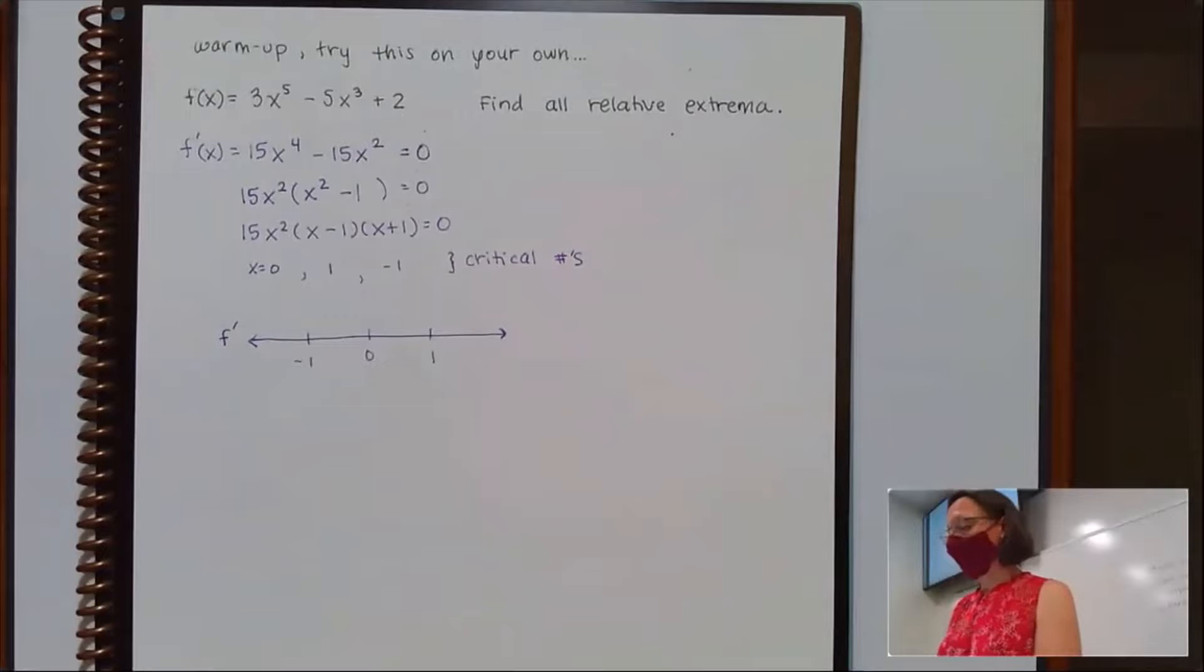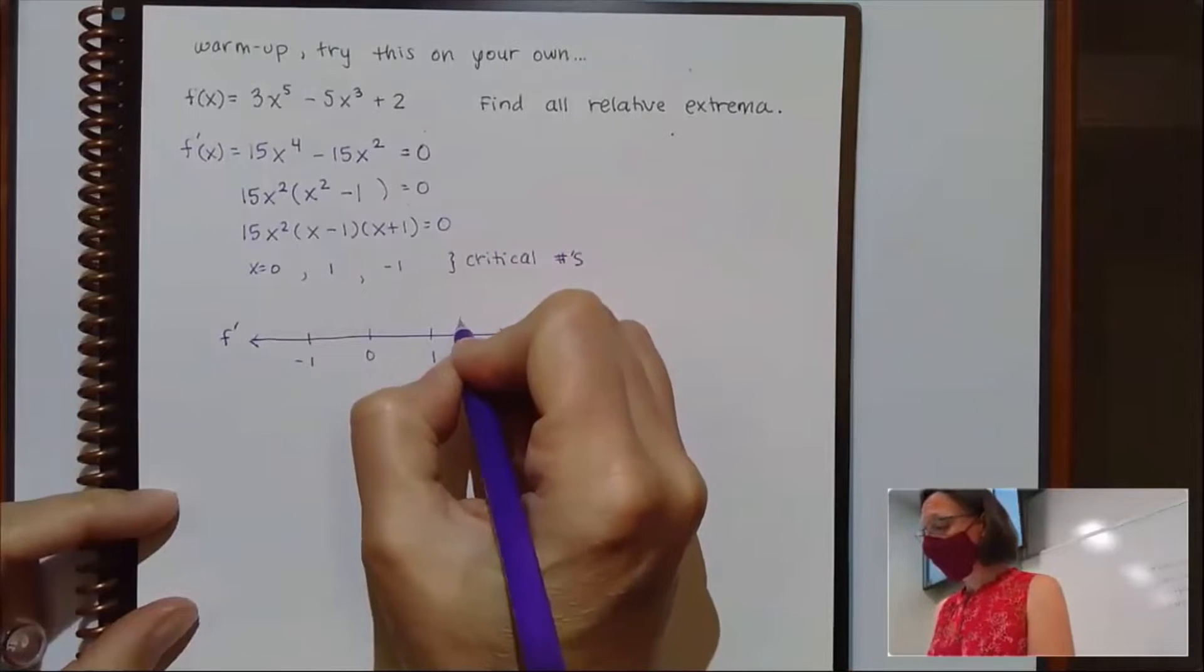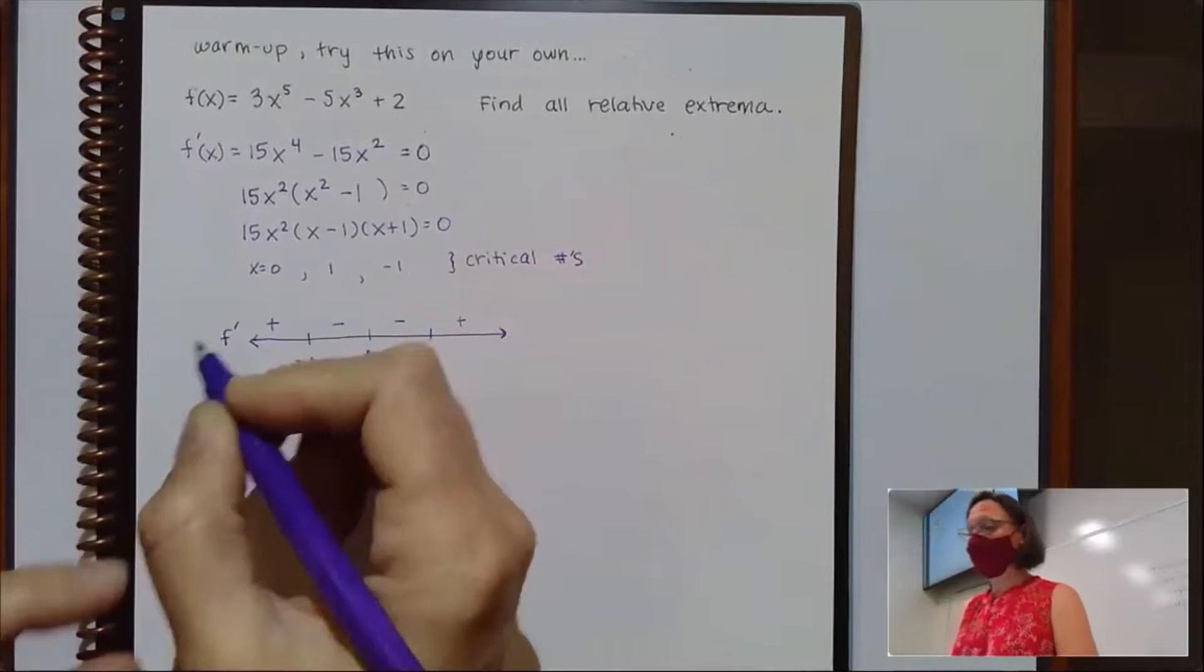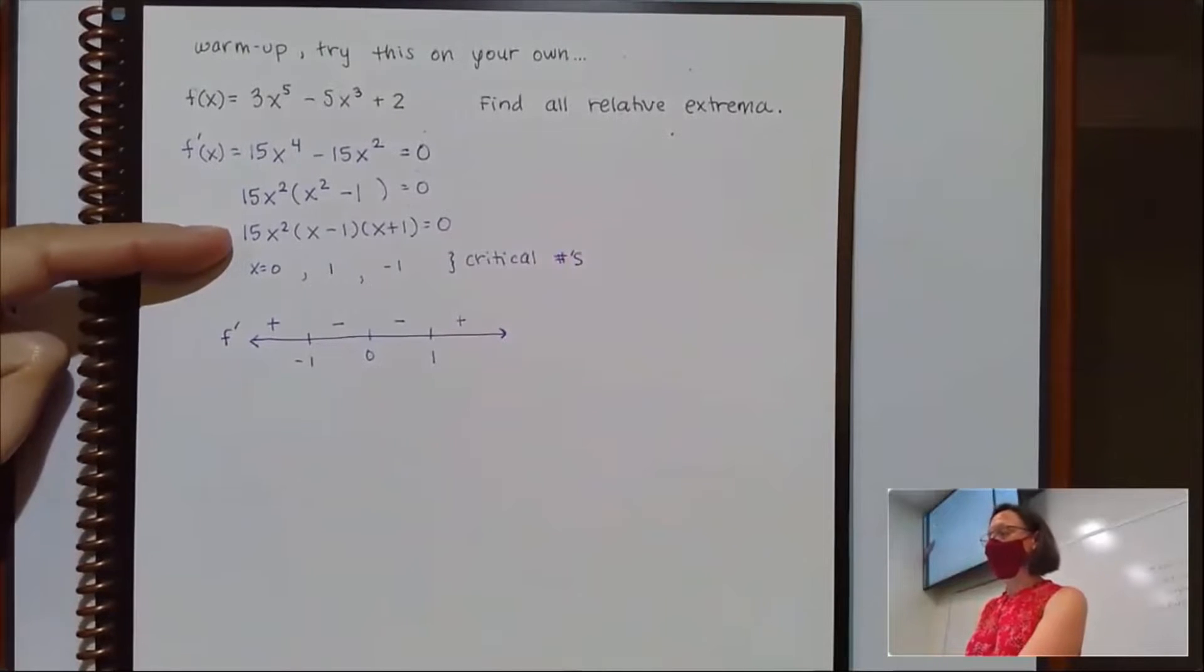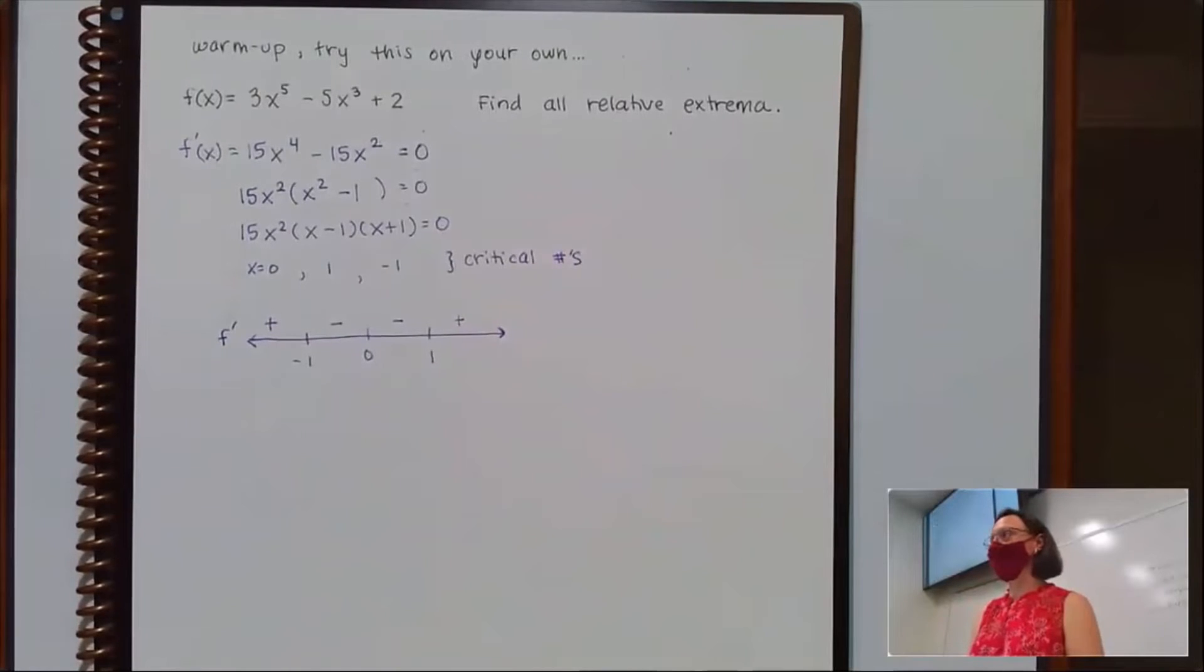Now because my pre-calc skills are strong, I can fill this number line in super quick. And I know that this ought to look like positive, a negative, a negative, and a positive. If your pre-calc skills don't allow you to imagine what this graph would look like, then we are going to have to pick some test points to plug stuff in. In each of these intervals, I only care about whether the derivative is positive or negative.